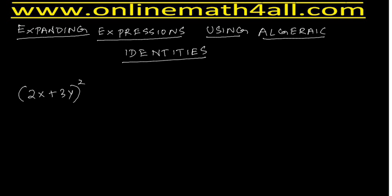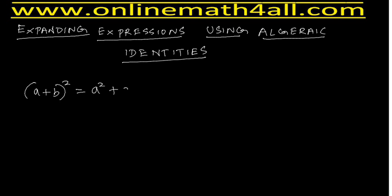We are going to expand this expression, 2x + 3y whole square, by using an identity. Before we solve the problem, first let us come to know about the identity we are going to apply. We consider the algebraic identity a + b whole square, that is equal to a square + 2ab + b square.